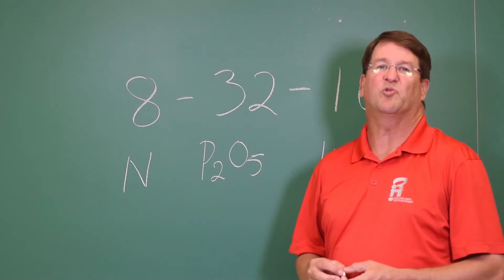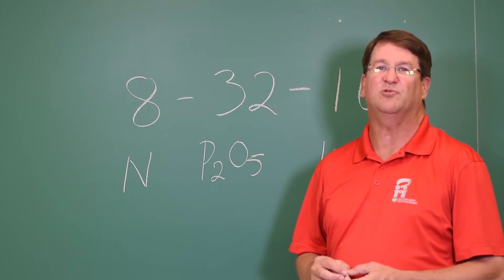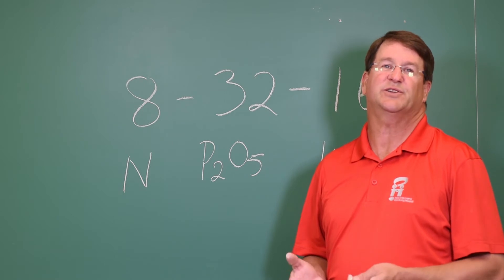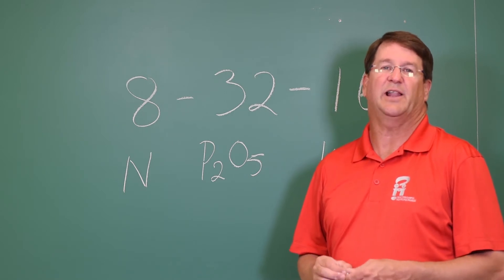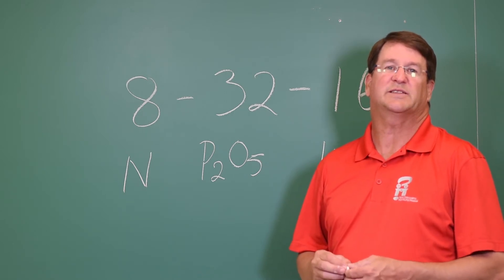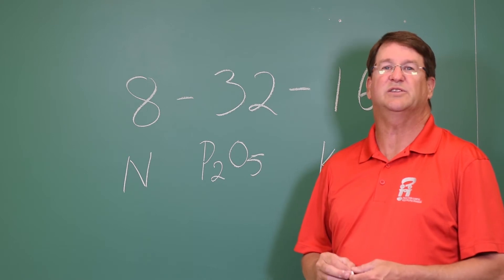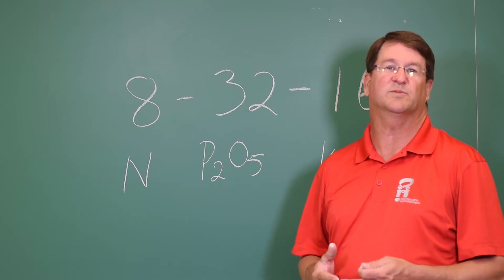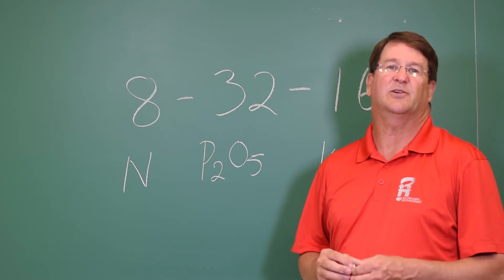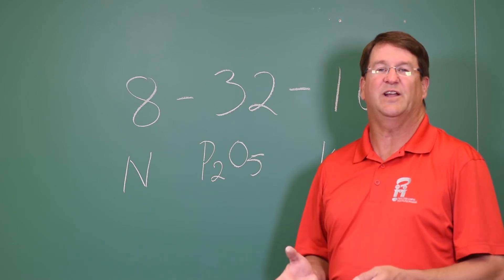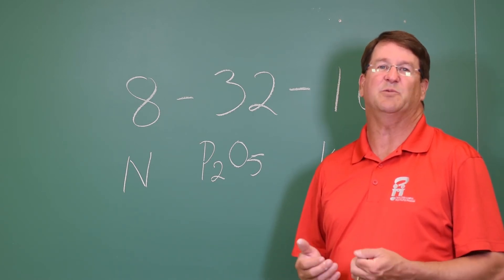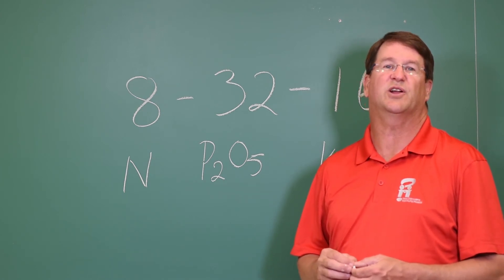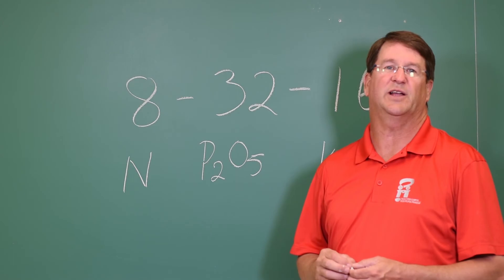You might wonder why we use P2O5 and K2O when talking about fertilizers, and that is tradition. When they first started to analyze fertilizers, the products that they got from their analysis were P2O5 and K2O — the oxide forms of those two elements — and so that convention has stuck. To this day we still use P2O5 and K2O to express the nutrient content of different fertilizers.